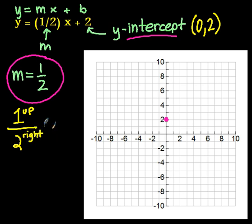Or you can also think of that as negative one over negative two, because a negative over a negative is a positive. So you can think of it as down one for every two you go to the left. They're both correct.